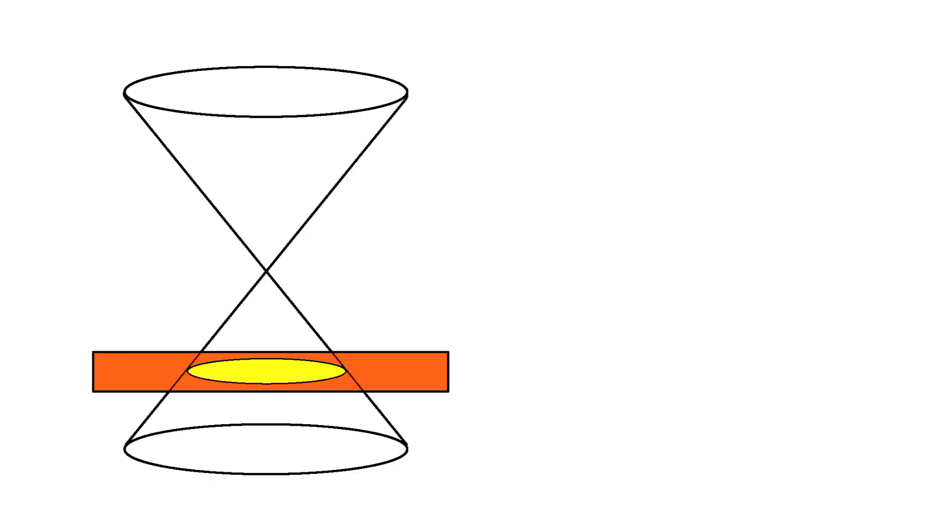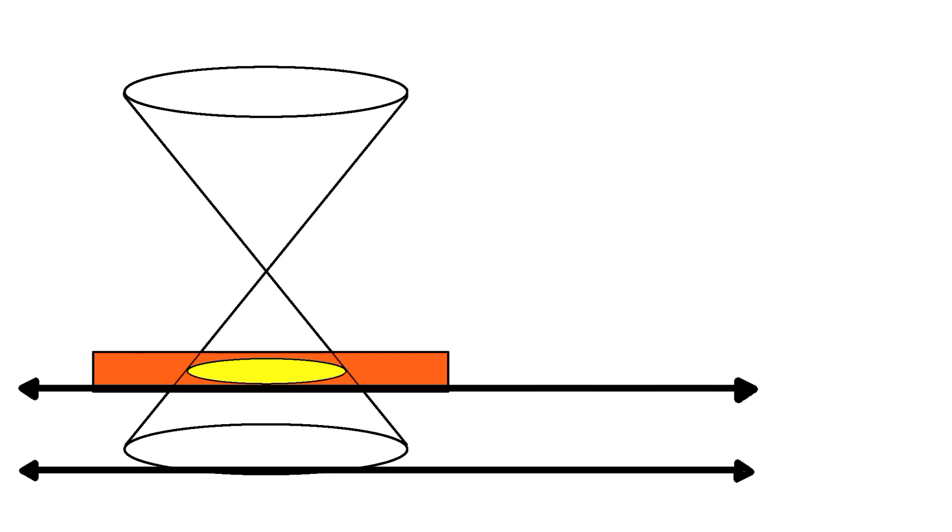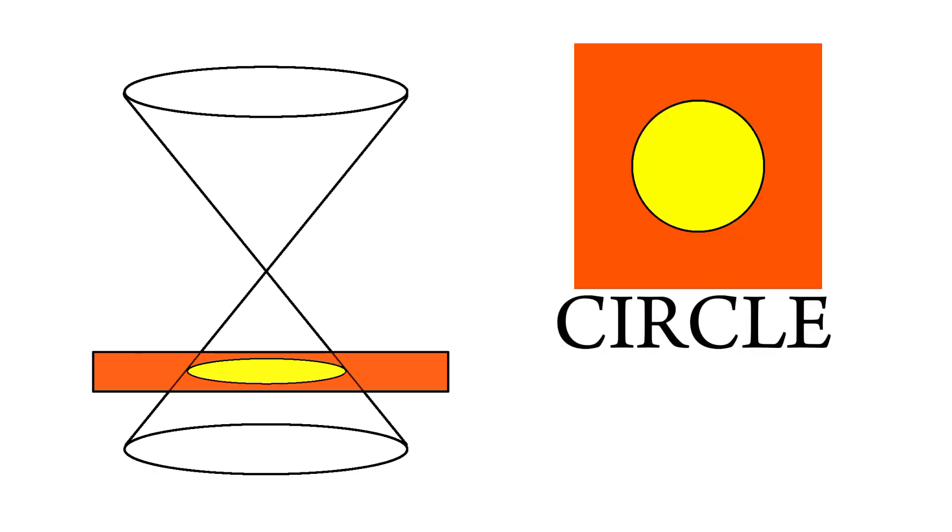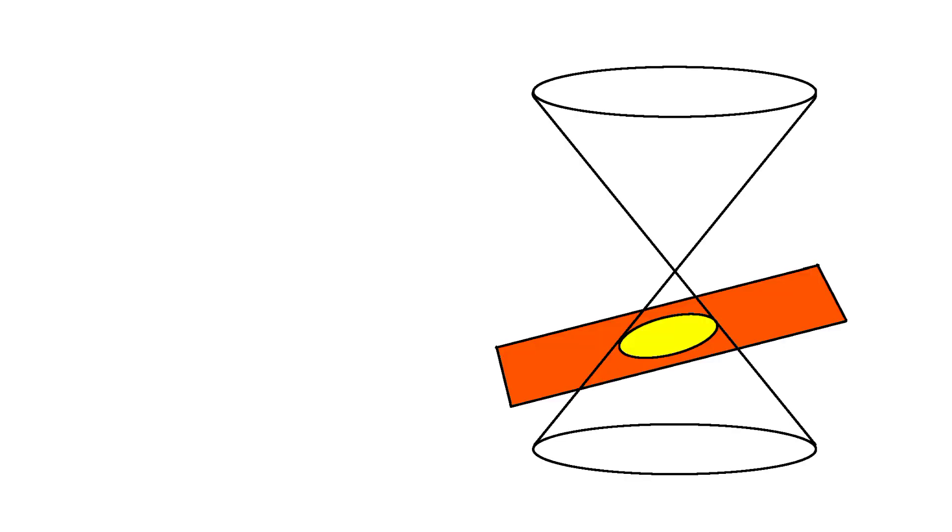If you intersect a plane such that it's parallel to the base, the intersection produces a circle. Circle has an eccentricity of zero. If you intersect the plane such that the slope of the plane is less